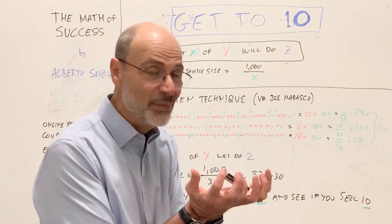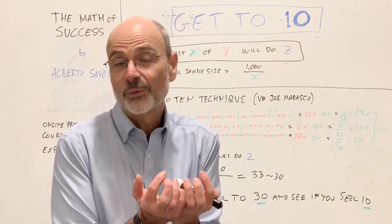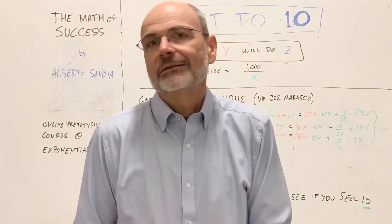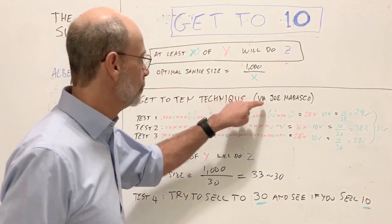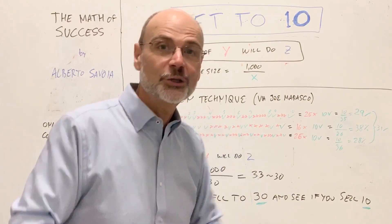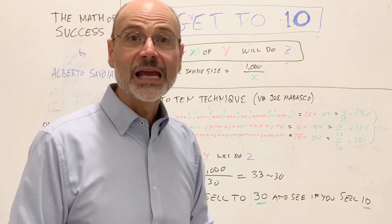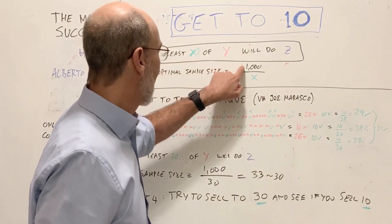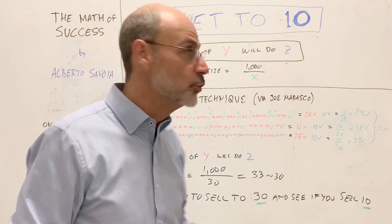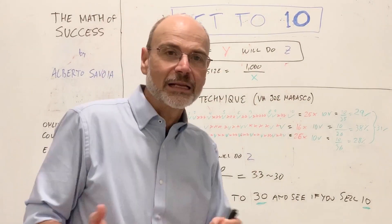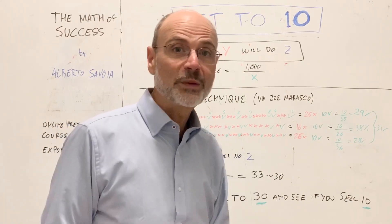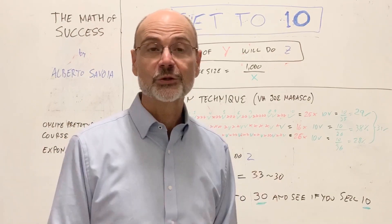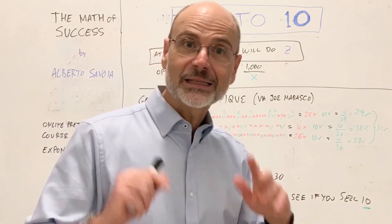Ideally, you know the minimum percentage for your product idea to be worthwhile — if it's 0.001% of a market, you probably don't want to get into it. But some people don't like to guess. Thanks to a new friend of mine, Joe Marasco — who is also a mathematician and physicist — he gave me a suggestion that is the opposite of my rule. Instead of starting with an X percent and using the formula 1000 over X, he said: why don't you just try to sell your product to people until you make 10 sales, which is statistically significant, and then see how many people you had to talk to to get those 10 sales.